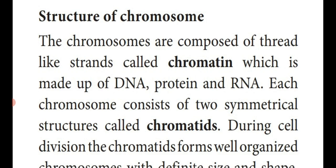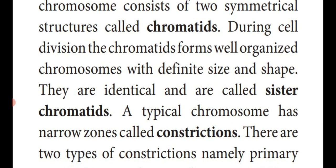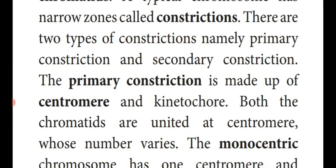Chromosomes are composed of a thread-like structure called chromatin, made up of DNA, protein, and RNA. Each chromosome consists of two symmetrical structures called chromatids. During cell division, these chromatids form well-organized chromosomes with a definite shape and size. The chromatids are identical and are known as sister chromatids. A typical chromosome consists of a narrow zone called a constriction, divided into primary and secondary constriction.